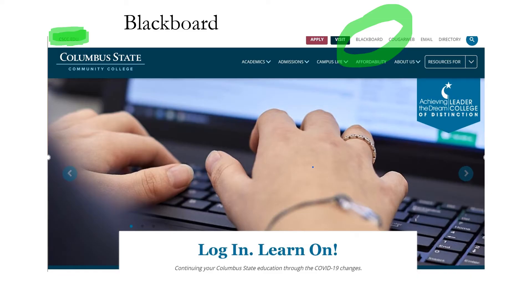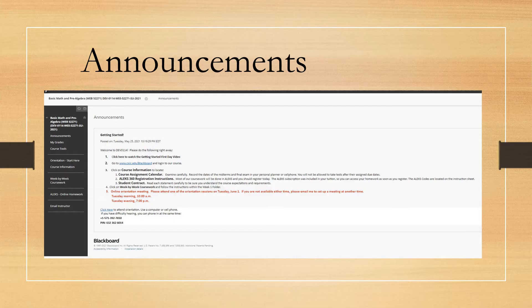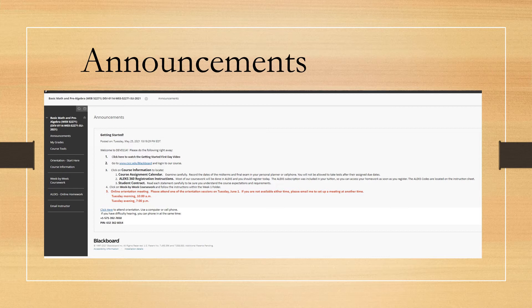Once you log on to the Columbus State website at cscc.edu, you can log into Blackboard and locate our course. In Blackboard, you will land on the announcements page. Announcements will also be emailed to you, so check your Columbus State email daily. You should click on each Blackboard button to see what's there.